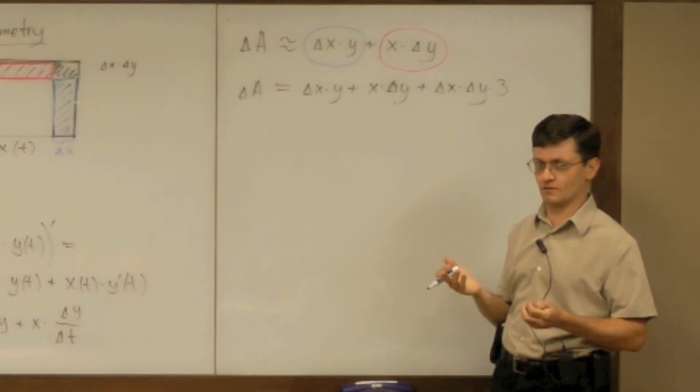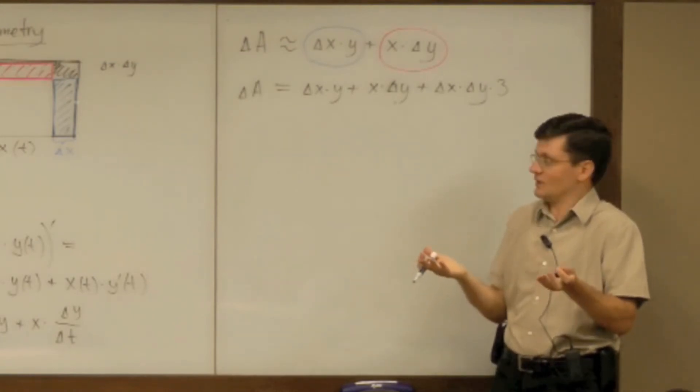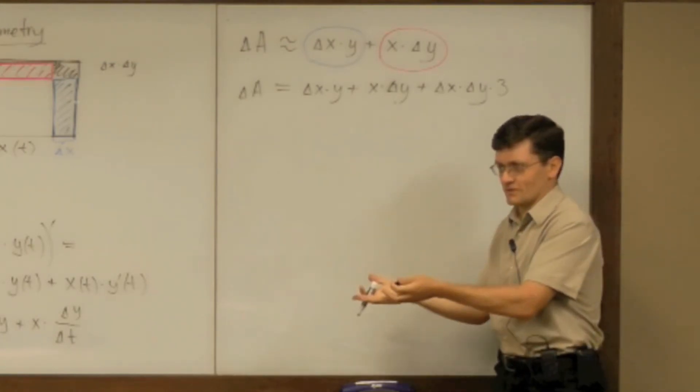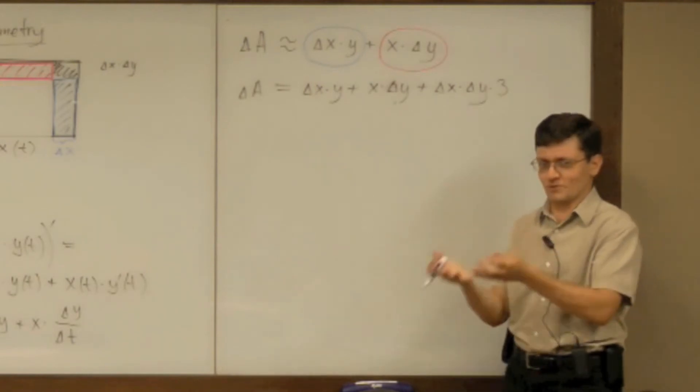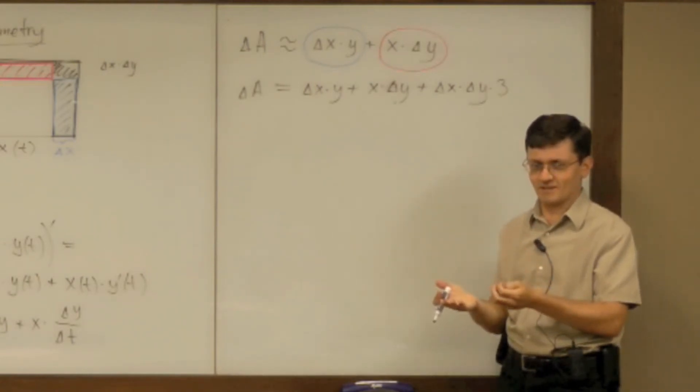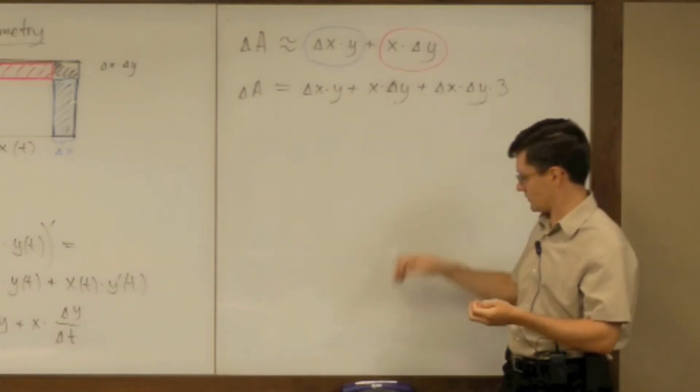Why is it going faster? How do you think about one term going to zero slow and one term going to zero fast? Why do you think it's going to zero faster?